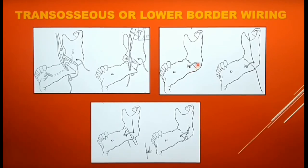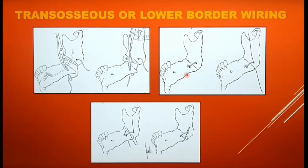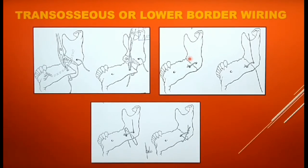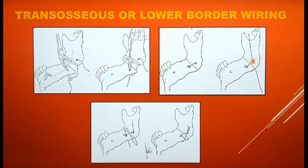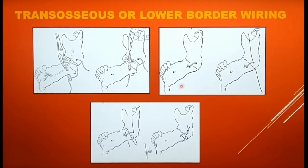The wires are applied either at the superior border, or at the lower border, or at both borders depending on the type of fracture. The superior border can be approached through an intraoral incision, whereas it is always better to approach the lower border extraorally. It is sufficient for the upper border wire to pass through the outer cortical plate alone, as the fixation is always combined with intermaxillary fixation. Usually a single lower border wire is not sufficient to stabilize the fracture, especially when the fracture line is oblique, multiple, or in case of a comminuted fracture, as the segments tend to override.